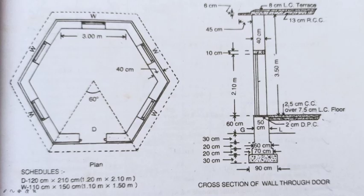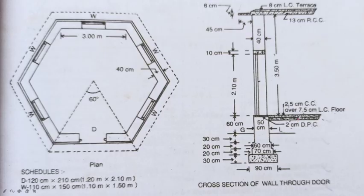We are going to have a plan and section. We are going to identify a variety of things: wall thickness, a plinth wall, a sunshade, dimensions and windows, and a small section. We are going to have a PCC, a first footing and second footing width, and a plinth wall. The total height is 90 cm, with 30 cm below ground level. The flooring is 7.5 cm LC floor, and at 3.50 m height we will have a wall thickness. The roof is 13 cm reinforced cement concrete.